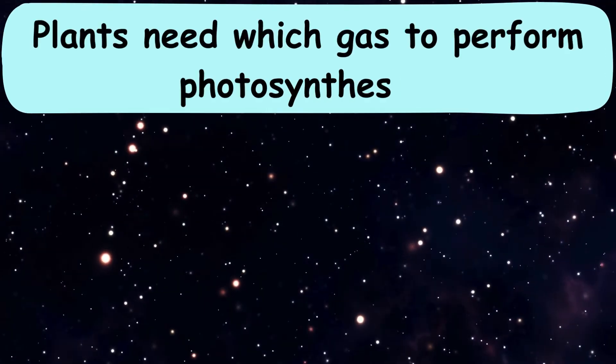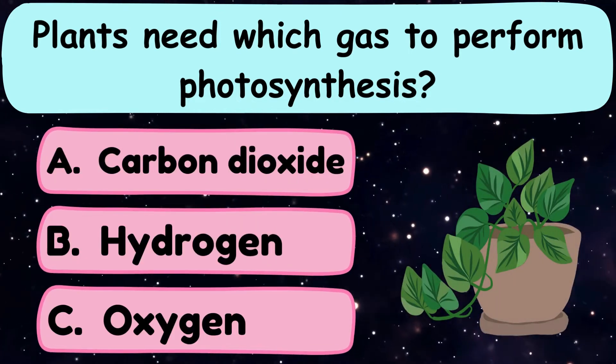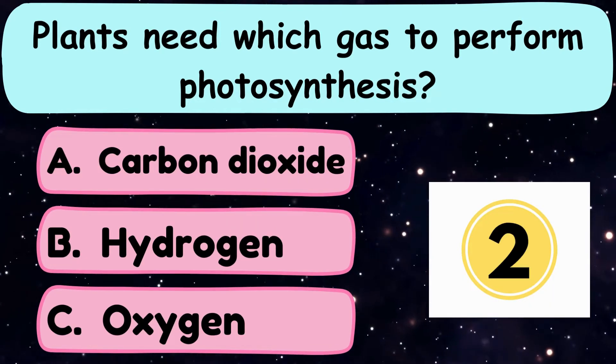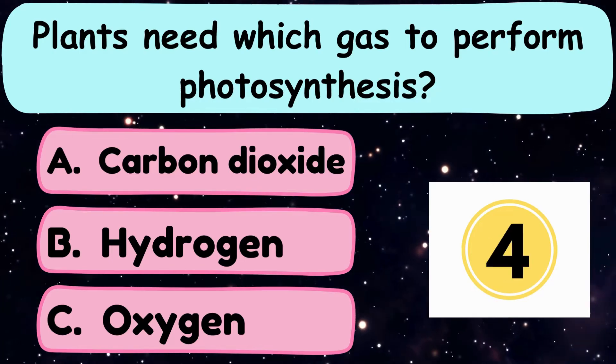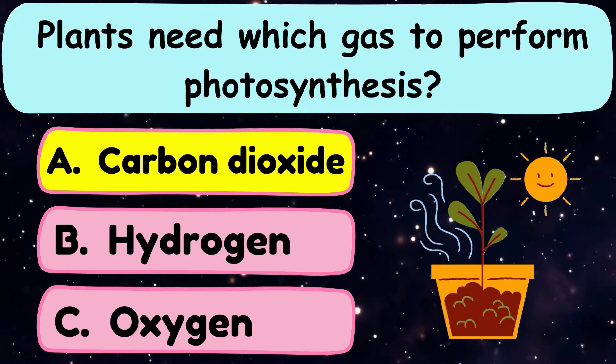Question number 19. Plants need which gas to perform photosynthesis? A. Carbon dioxide, B. Hydrogen, or C. Oxygen? And the correct answer is option A. Carbon dioxide.